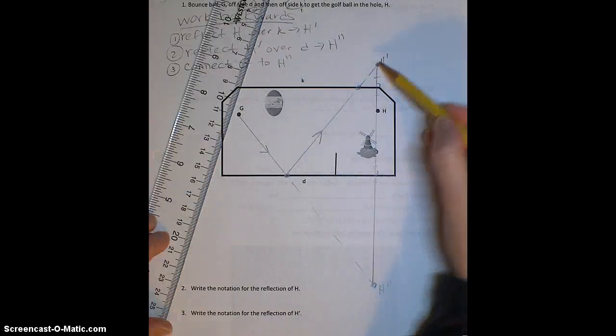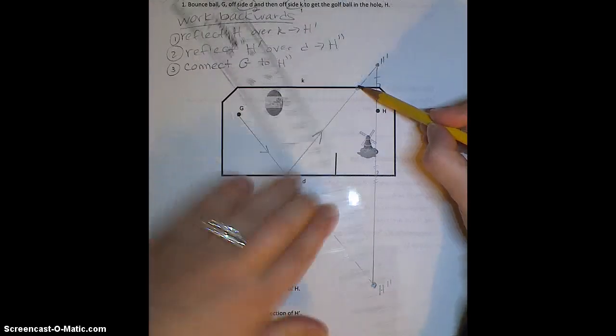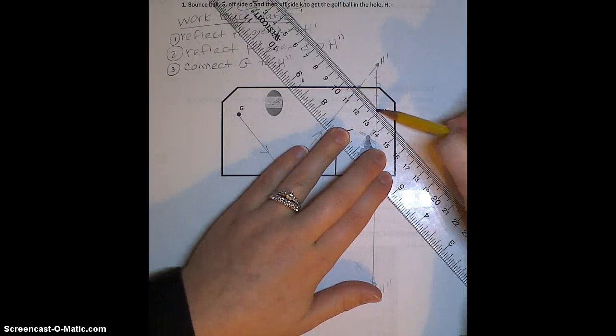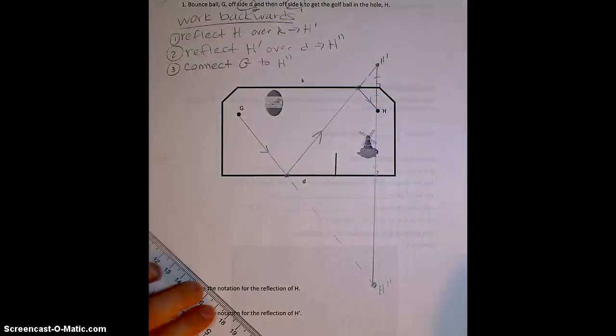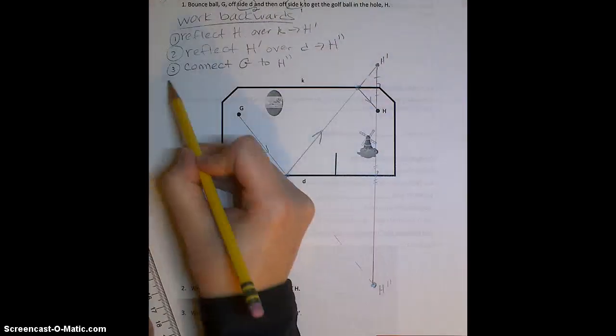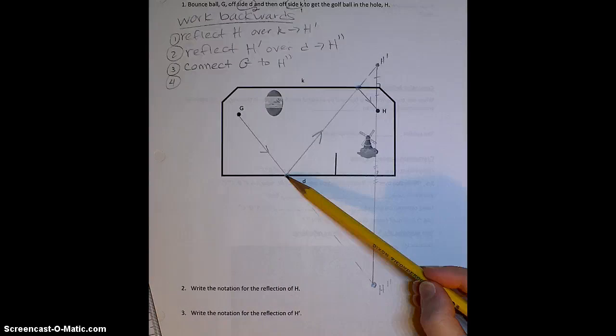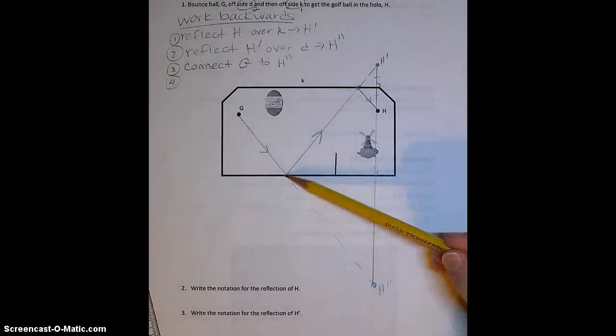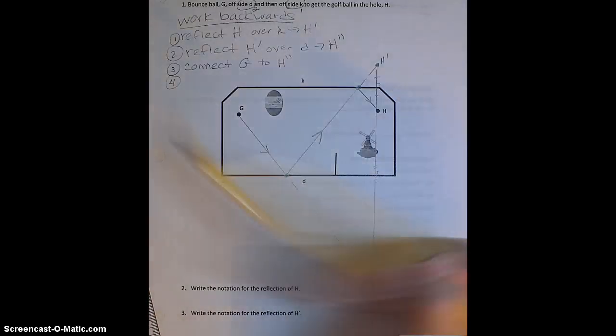Again, it's not going to go through the wall. Rather, it will bounce right off this wall into the hole for a hole in one. So after we connected G to H double prime, we bounced off the wall to H prime.